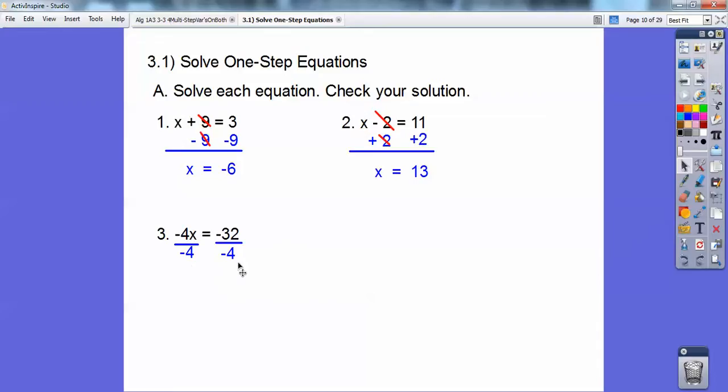Now the negatives will cancel. The 4s will cancel. Over here, I have negative divided by a negative becomes a positive. And 4 goes into 32 eight times. All right, and if I just checked it, negative 4 times 8, yeah, that equals negative 32.